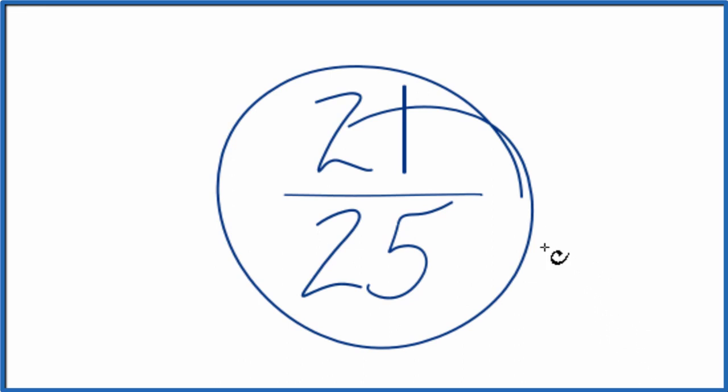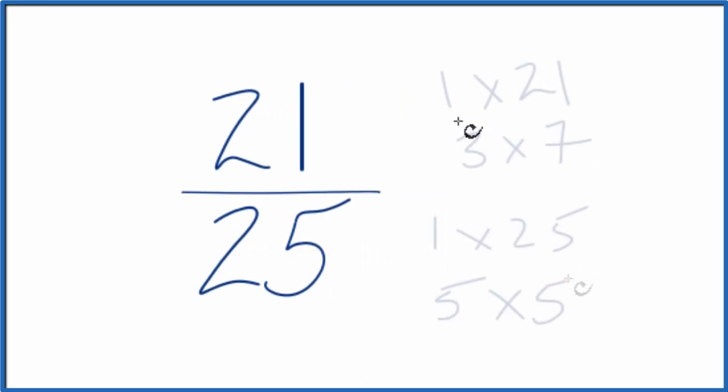If you look at the factors of 21 and 25, you can see the factors of 21 and 25 and 1. That's the greatest common factor.